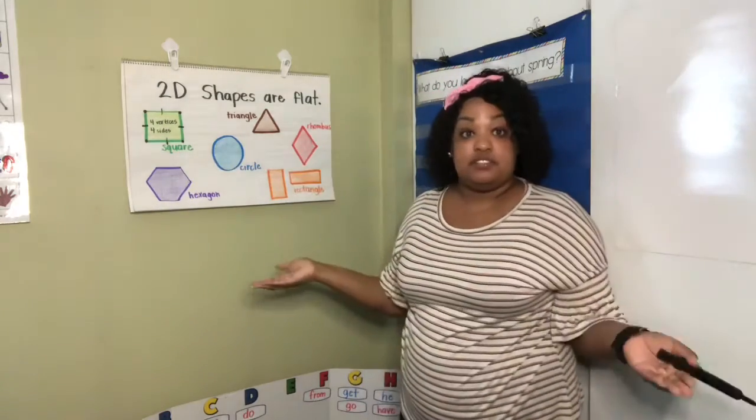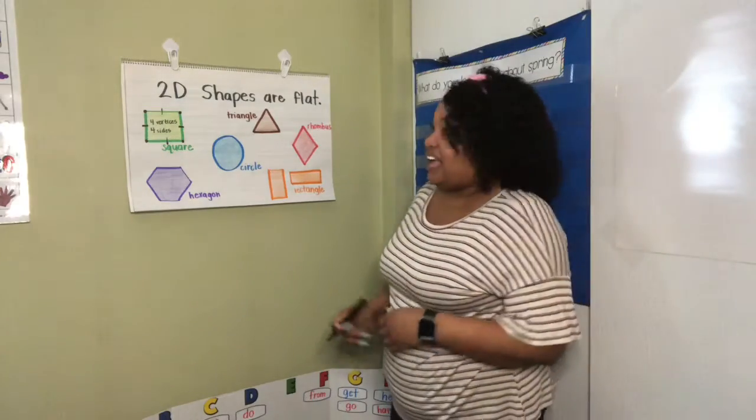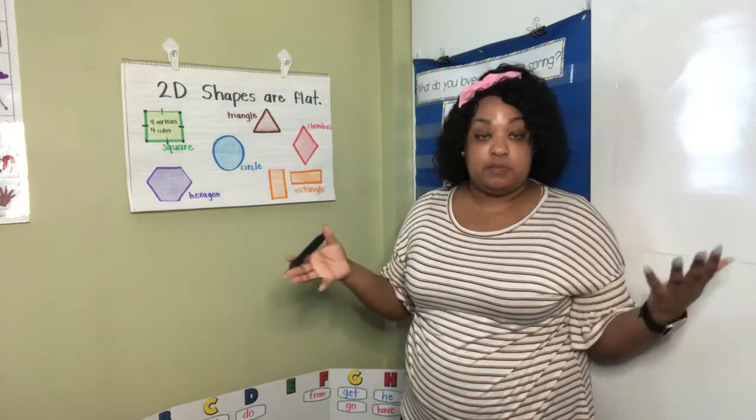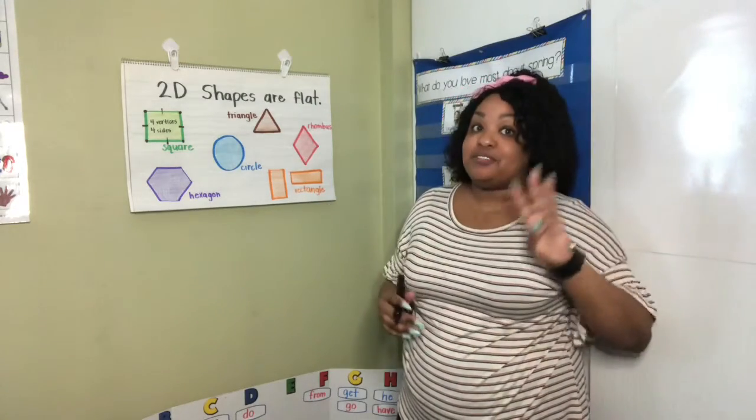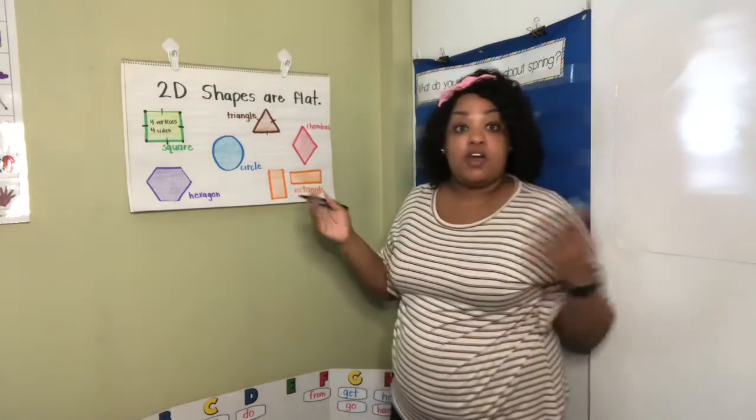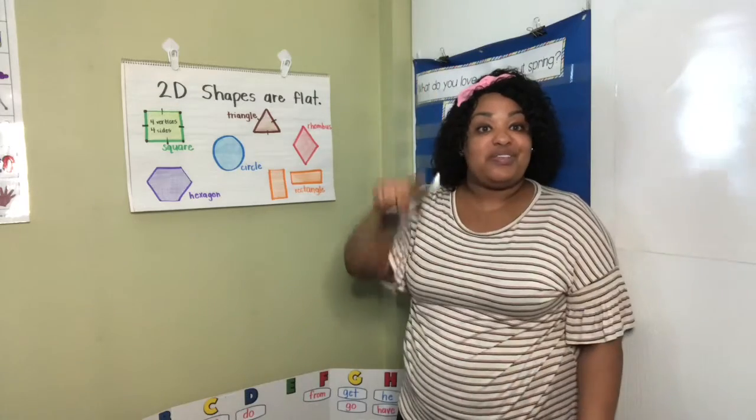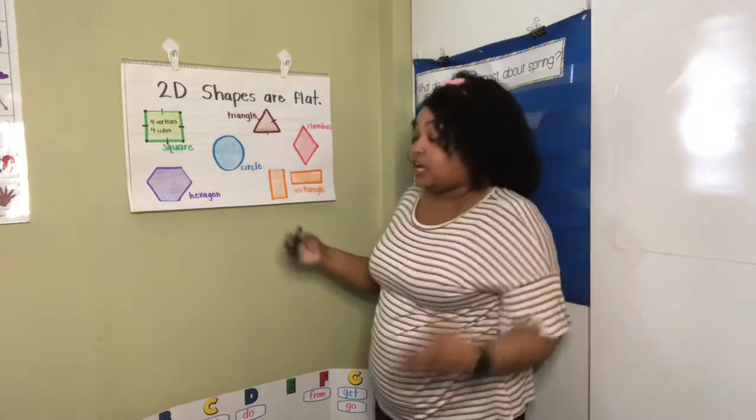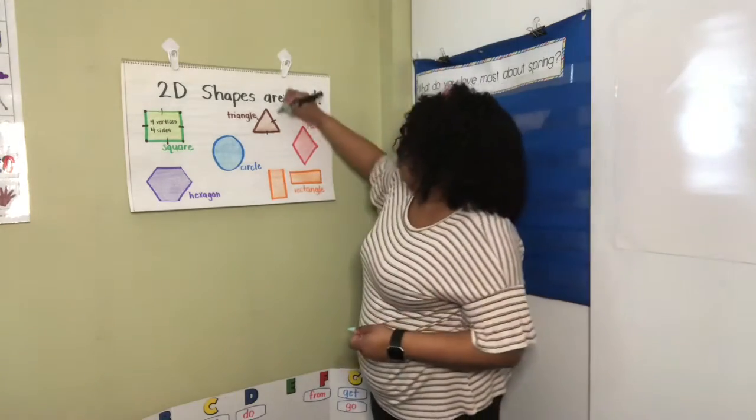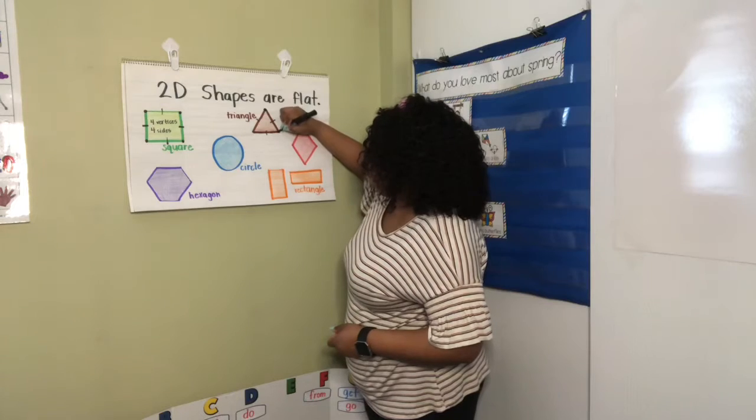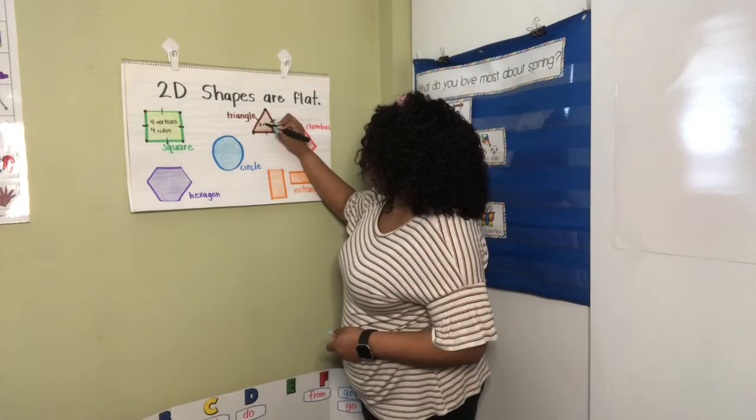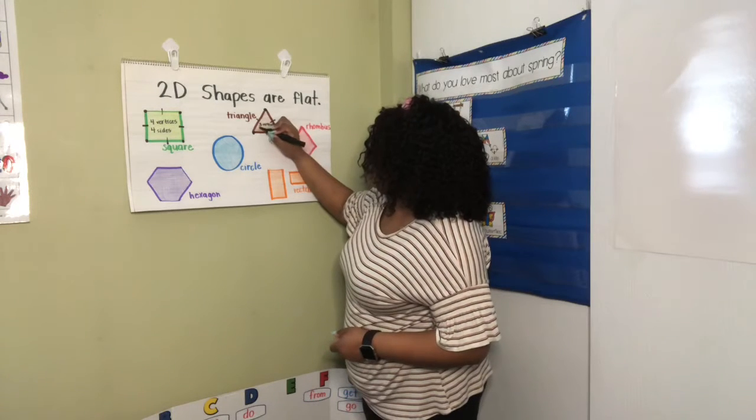Our next shape is a triangle. And we had a song that helped us remember what makes a triangle special. Triangles all have three sides, have three sides, have three sides. Triangles all have three sides. One, two, three. So, a triangle is special because it has three sides and three vertices.